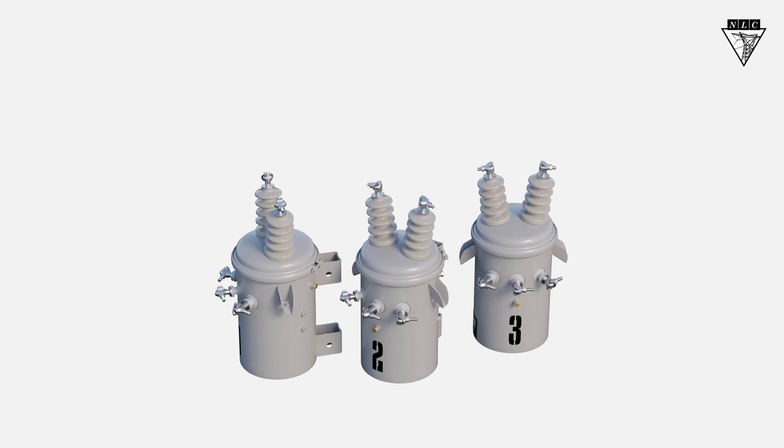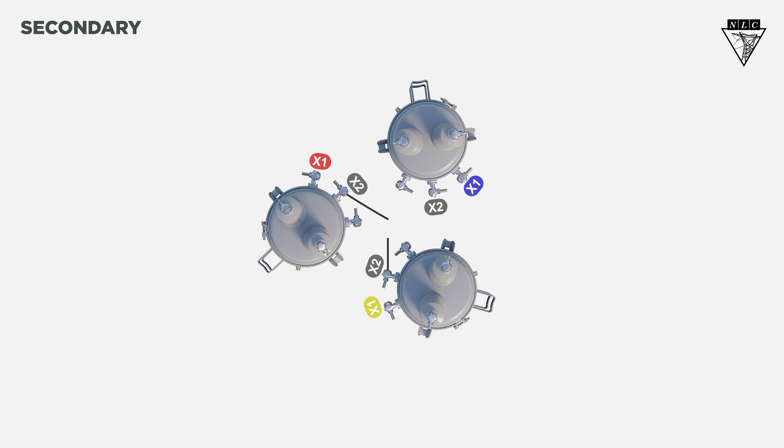To configure the secondary connections as a Y, start by connecting the X2 bushings together. Once they're connected, tie them to ground.